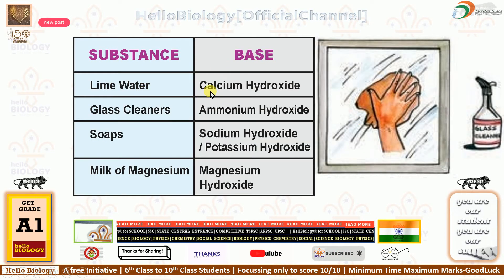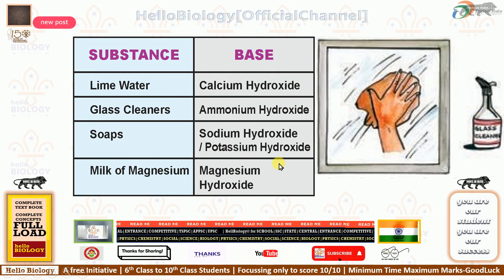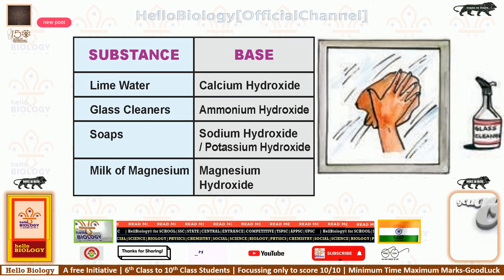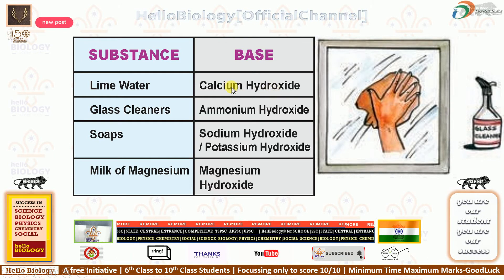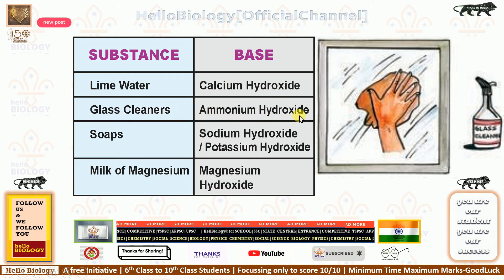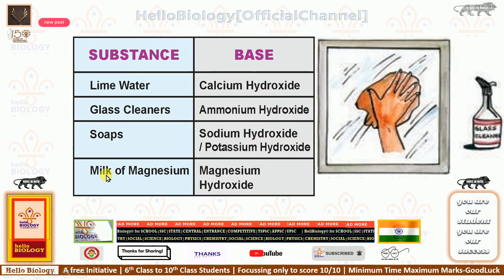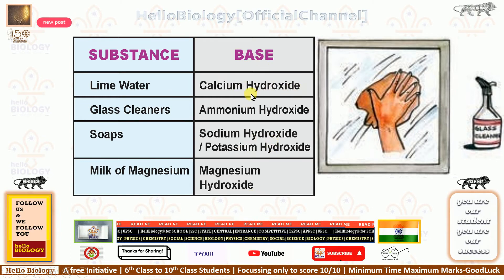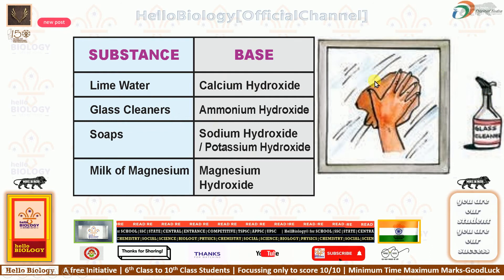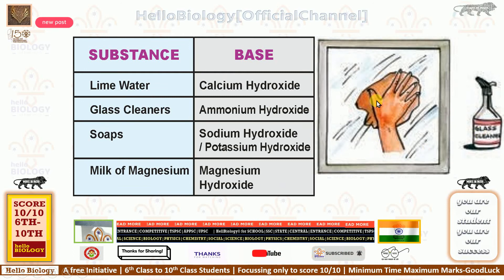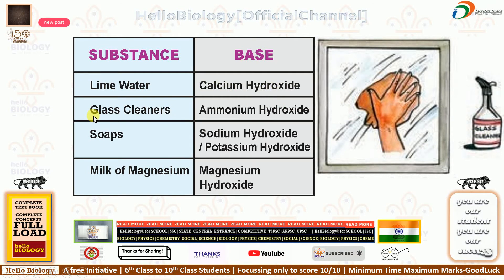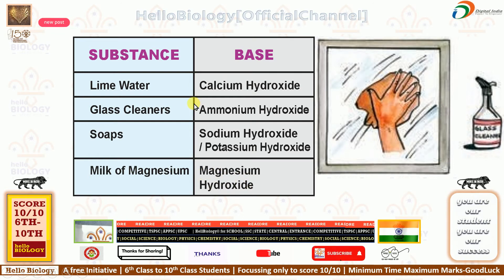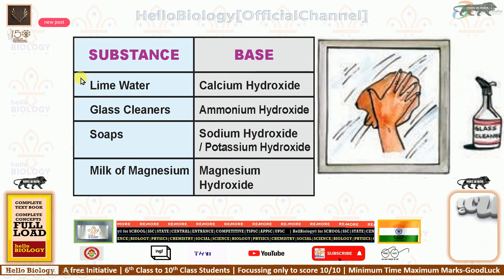For basic nature, only four are given in our textbook and these four are the most important. Lime water consists of calcium hydroxide. Glass cleaners consist of ammonium hydroxide — that is why they have a bad smell. Soaps consist of sodium hydroxide or potassium hydroxide. Milk of magnesia consists of magnesium hydroxide. Note that hydroxides are present in bases. These four you must remember; there are no special clues, just memorize them.